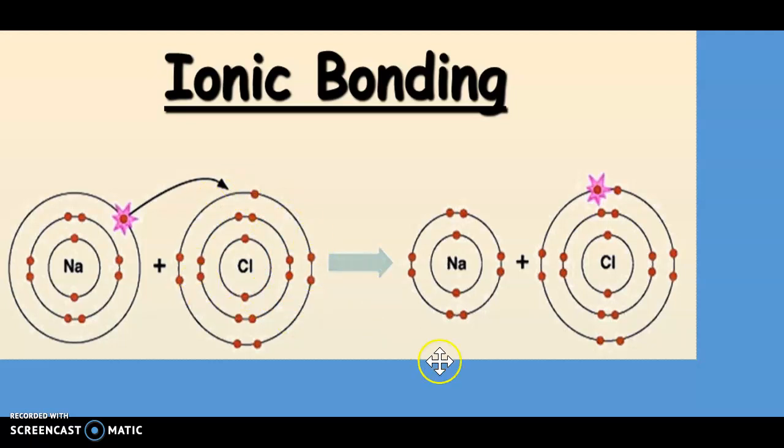Now in order for sodium and chlorine to get a stable full outer shell configuration, sodium will lose one electron and become 2, 8. Chlorine will gain an electron and become a 2, 8, 8 configuration.